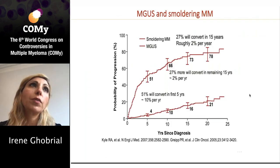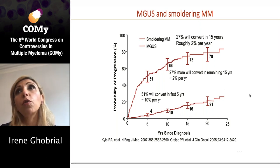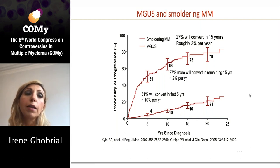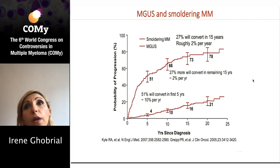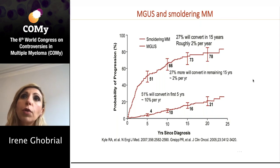MGUS and smoldering are very interesting because they're asymptomatic stages, yet as you progress to smoldering disease with more tumor cells in the bone marrow, you start seeing heterogeneity in clinical progression. Some patients progress very rapidly within five years, and some patients may never progress in their lifetime. You truly want to understand how to dissect those apart — what changes in a permissive versus non-permissive microenvironment — and can we use immunotherapy in the future to change the environment to become non-permissive, or even change it back to a normal environment?